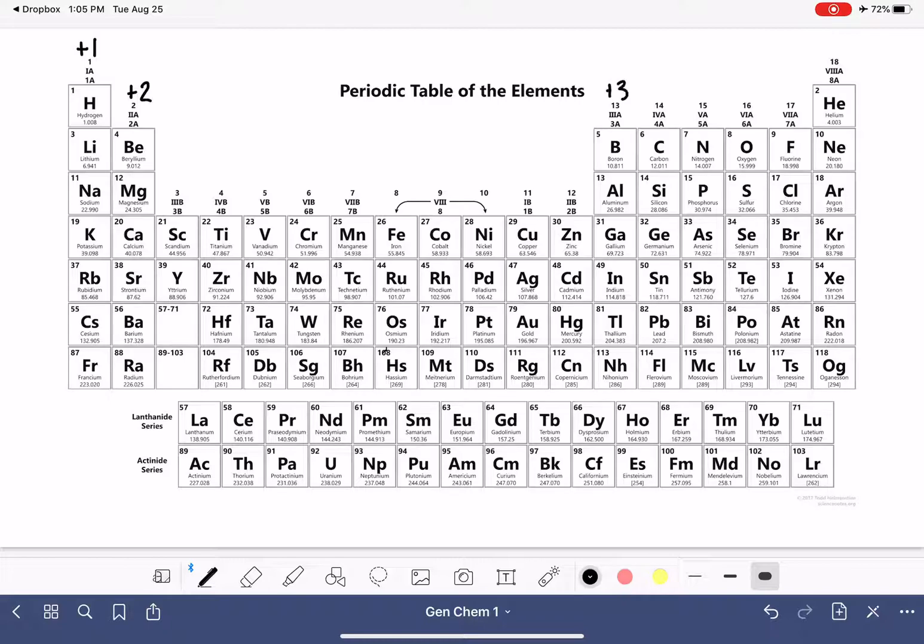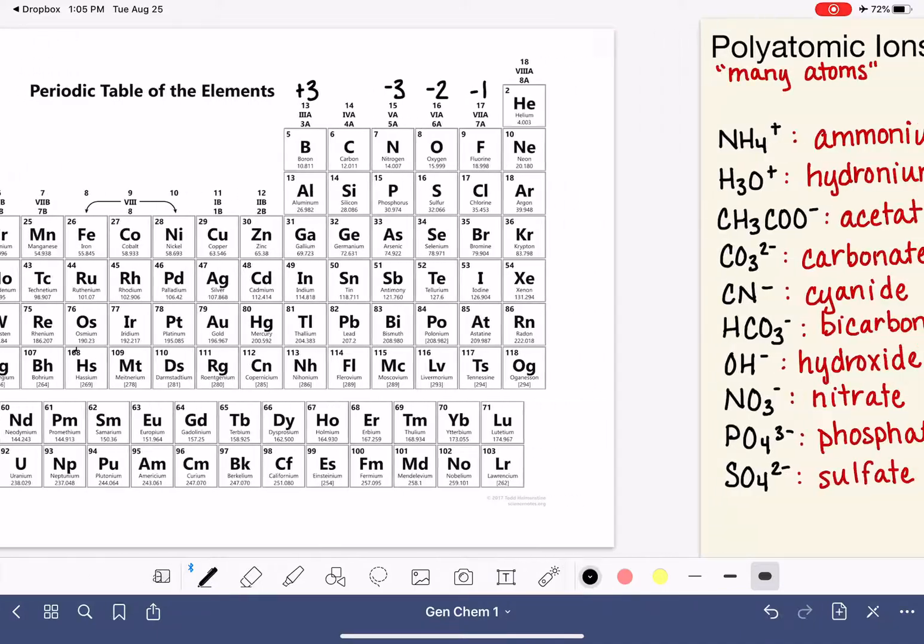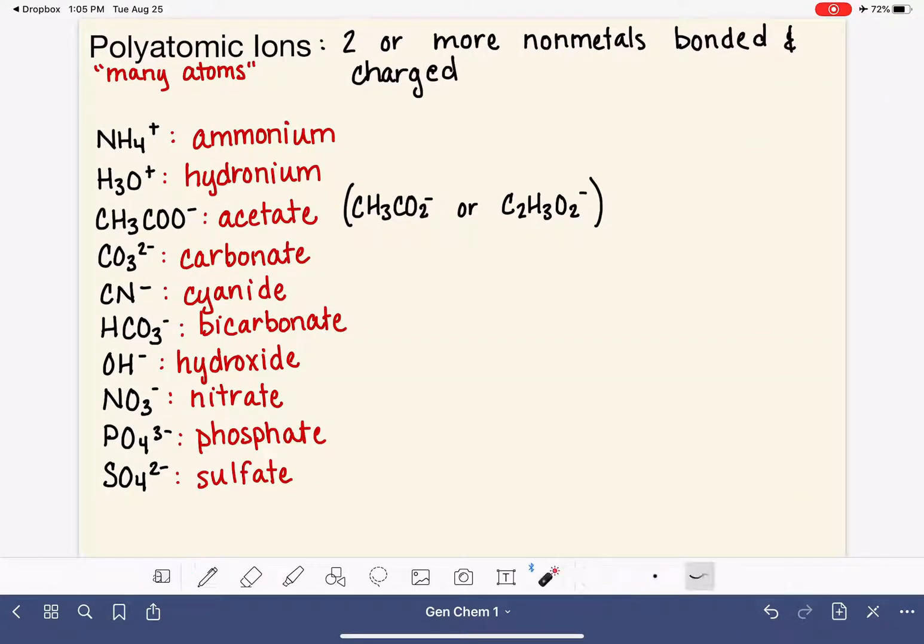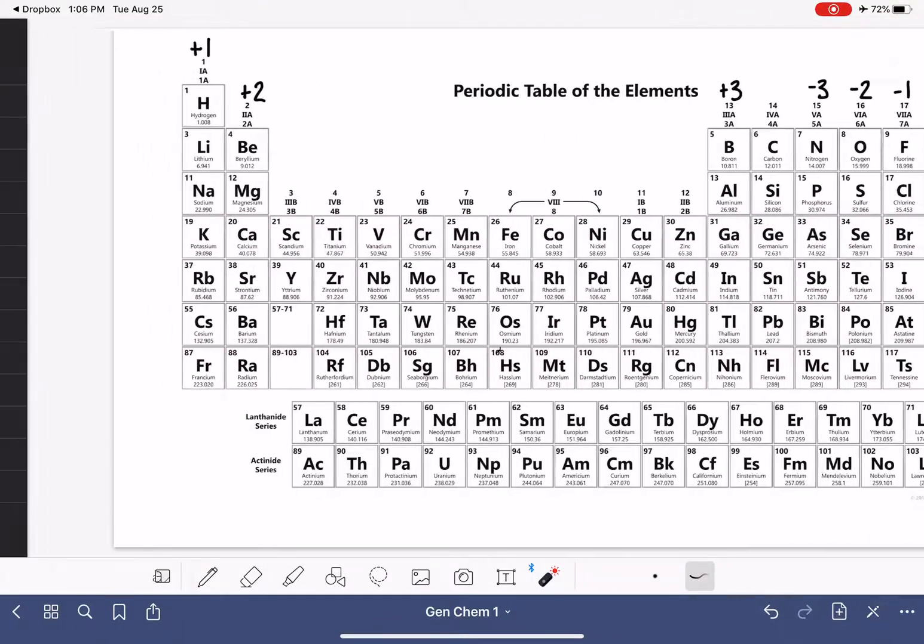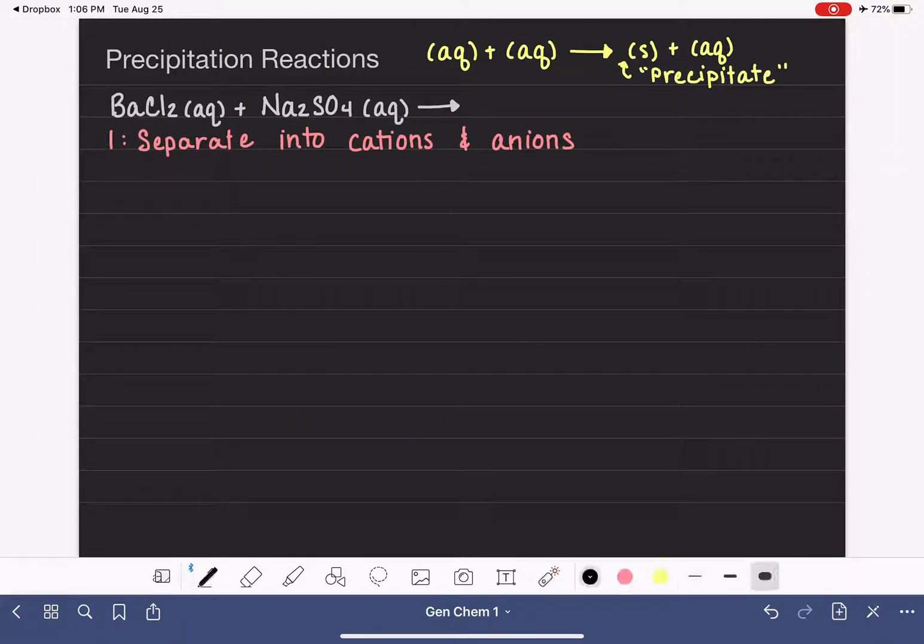These ones have plus two charges. These have plus three charges. And then we go minus three, minus two, and minus one. So we're going to want to remember that. And another thing that you're going to want to remember from a previous lesson is the formulas of polyatomic ions. Here are the most common polyatomic ions. But we may occasionally see some polyatomic ions that are not on this list. We want to be able to recognize them when we see them.